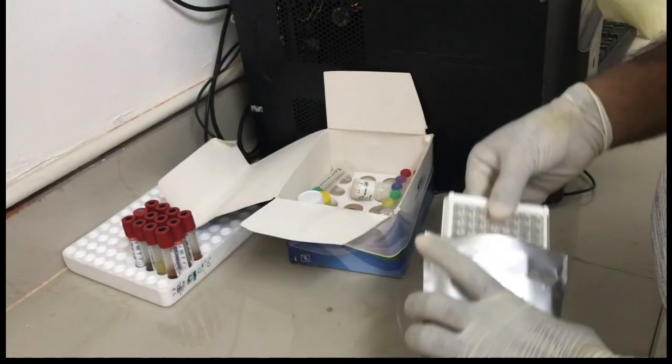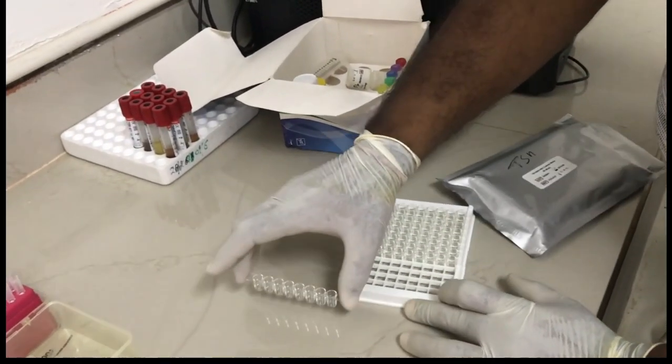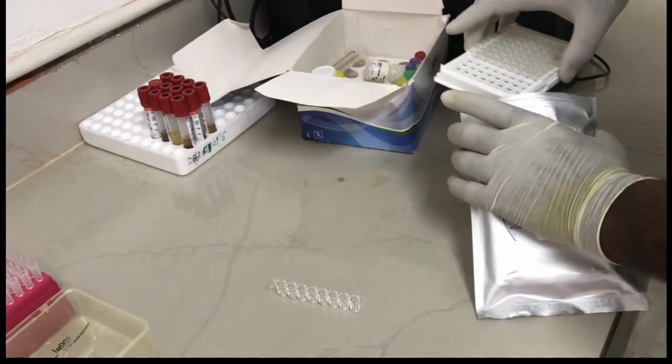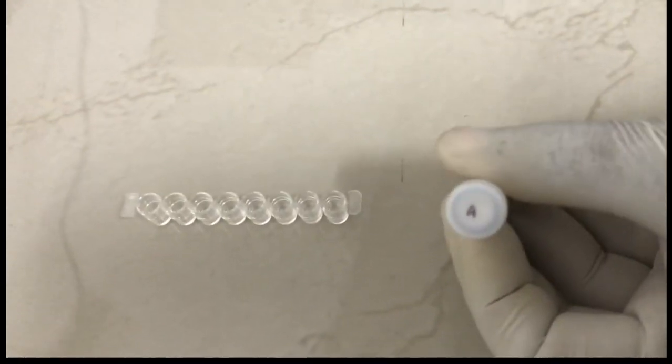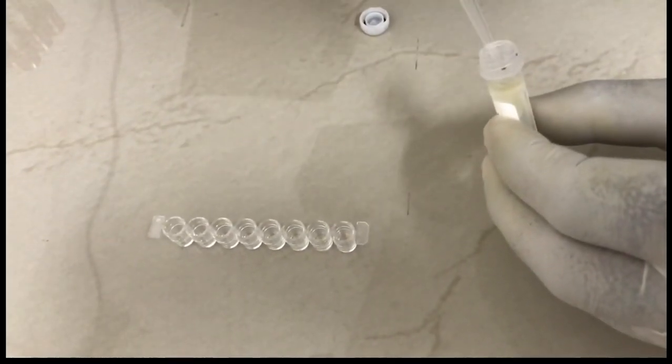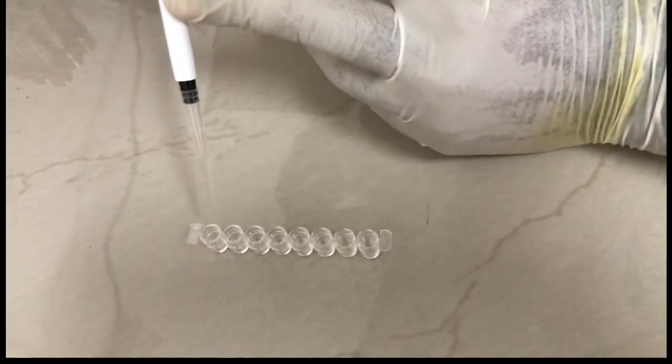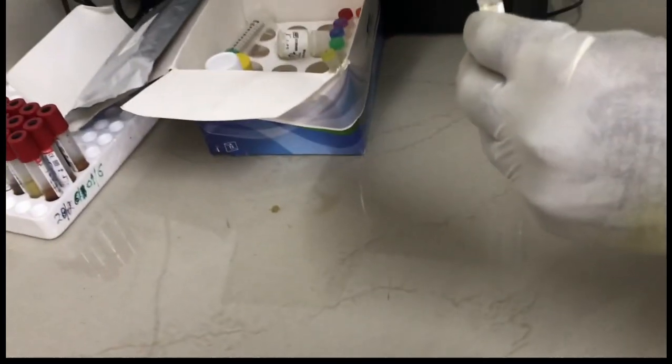Now we are starting the first step of our TSH diagnosis. Here we have taken out the 96 well coated strip, in which the wells are already coated with TSH antibodies. We have taken out 8 wells. These are the 8 wells in which the test will be done. We will be taking 5 controls and the rest 3 wells will be taken for sample testing. This is control A, which we are taking first. 50 microliters of this control A will be put into the first well.